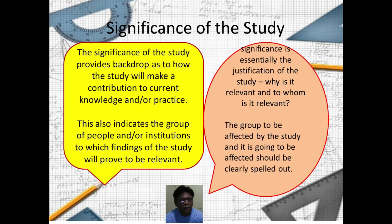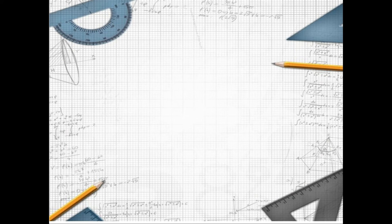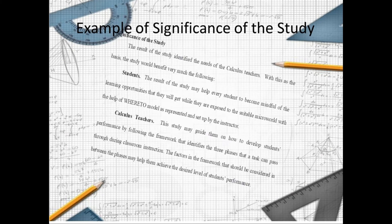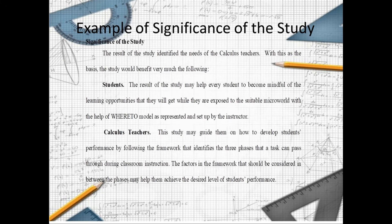The group to be affected by the study and how it is going to be affected should be clearly spelled out. This is an example of the significance of the study. The first paragraph is the introductory paragraph, then it mentions persons, groups of people, and institutions, with justification for being relevant in the study.